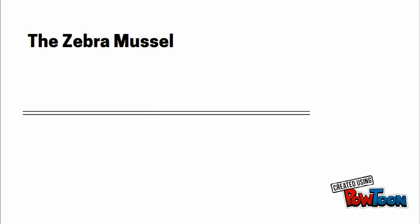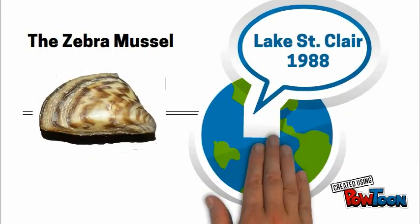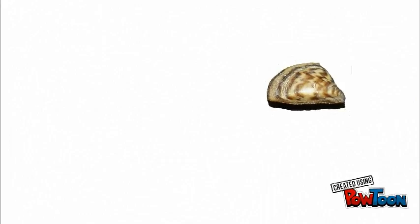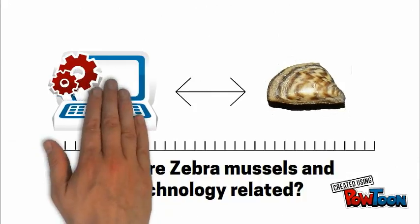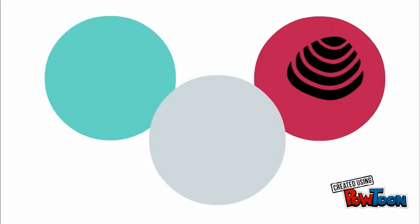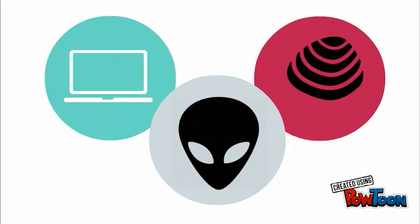About the zebra mussel: the zebra mussel was first seen in Lake St. Clair in 1988 and spread to all the Great Lakes by 1990. Its introduction caused disruption to fish communities in the Great Lakes. You may well ask, how are zebra mussels and technology uses in schools related? Well, Zhao and Frank metaphorically classify both the zebra mussel and computers in schools as alien species introduced into a new environment.